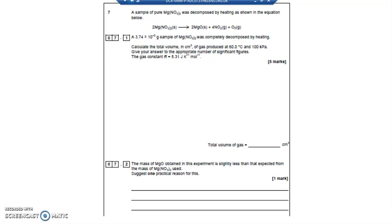A 3.74 times 10 to the minus 2 gram sample of magnesium nitrate - why have they given me mass? They have given me mass and a formula because from the formula I can work out MR and using the mass and the MR I can work out number of moles. So let's do that first of all.